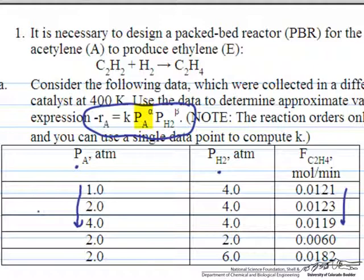Therefore alpha, the order with respect to acetylene, is zero, because A is evidently having no effect on the rate of reaction.